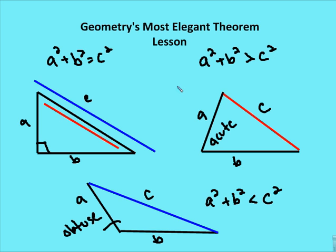This brings us to inequalities relative to the Pythagorean theorem. If A squared plus B squared equals C squared, we have a right triangle. If A squared plus B squared is greater than C squared, the hypotenuse is reduced and we have an acute triangle. If A squared plus B squared is less than C squared, C is extended and we have an obtuse triangle. Keeping A and B the same, a longer C produces an obtuse triangle, and a shorter C produces an acute triangle.